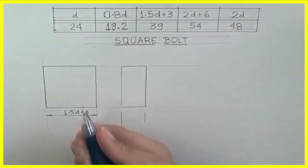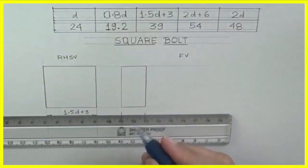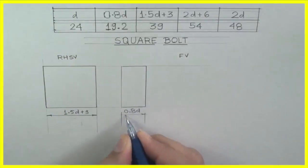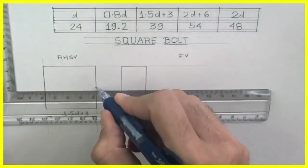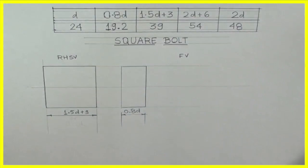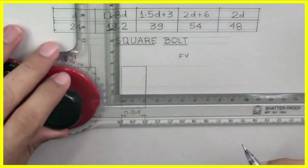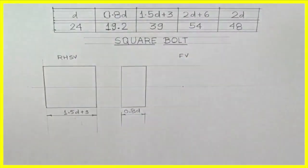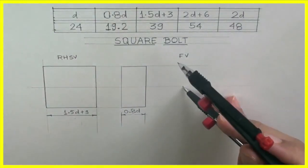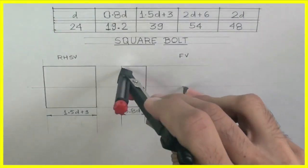Then head is 0.8d. This is right-hand side view, front view. Now after that I will find the midpoint of the right-hand side view and I will draw axis and mark 2d to draw the curve.